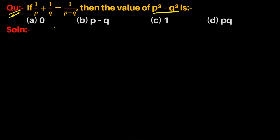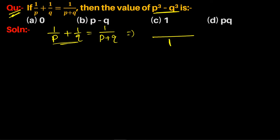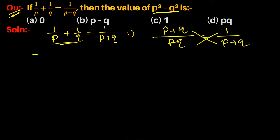Now presenting a second approach. Given 1/p + 1/q = 1/(p+q), using cross multiplication: p(p+q) + q(p+q) = pq, expanding gives p² + pq + pq + q² = pq.